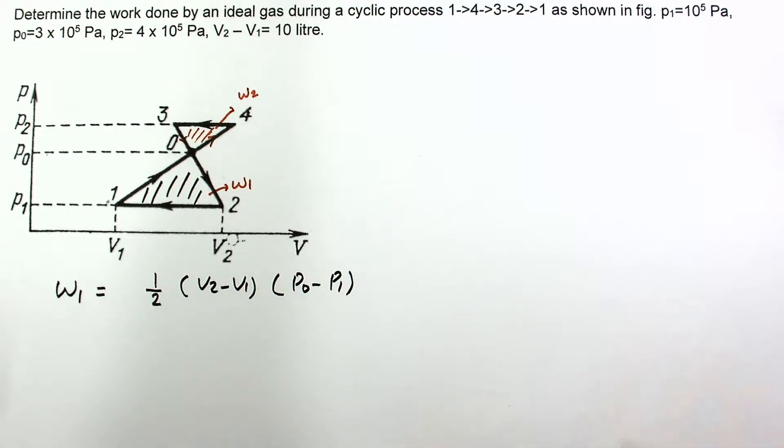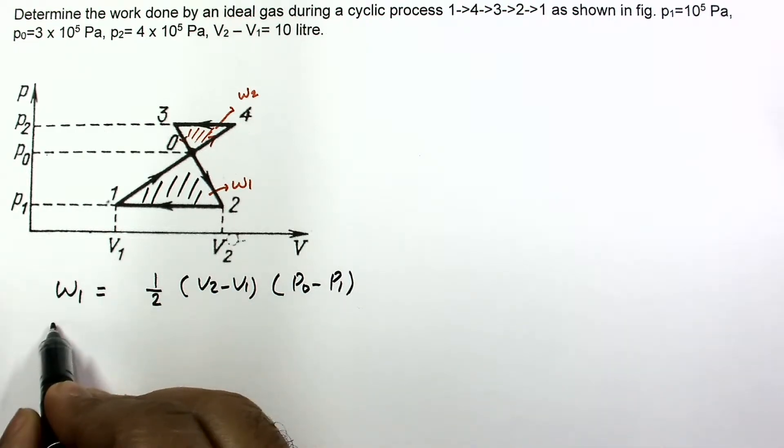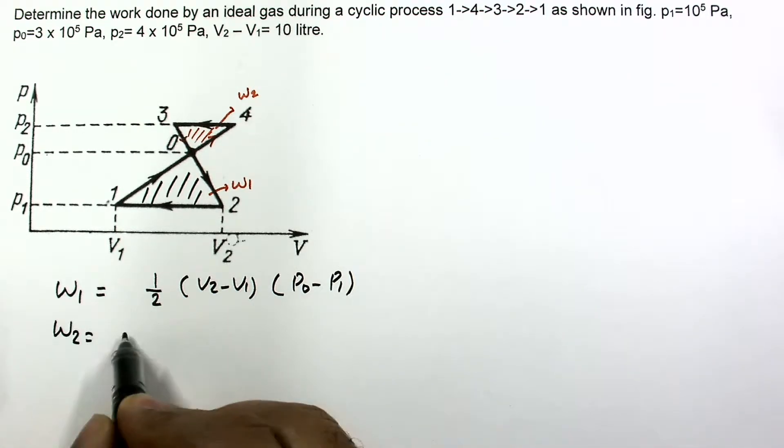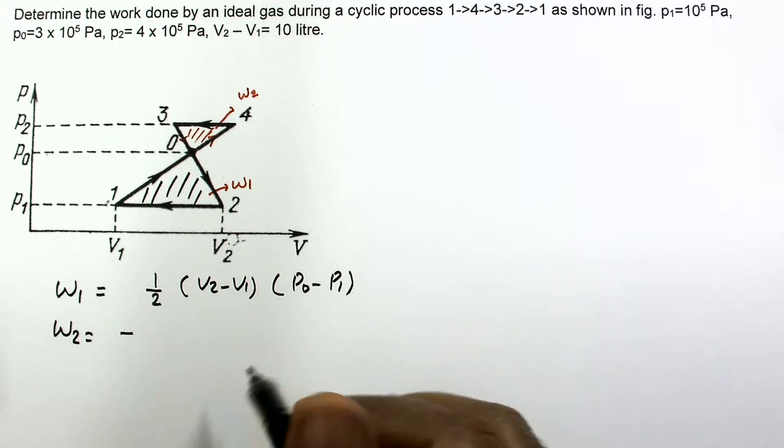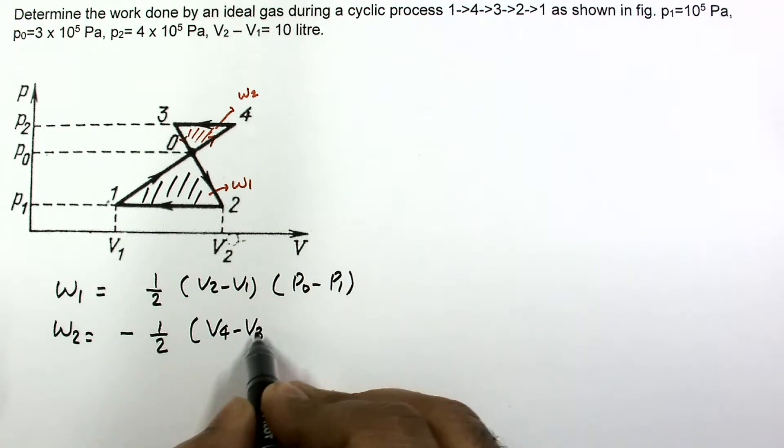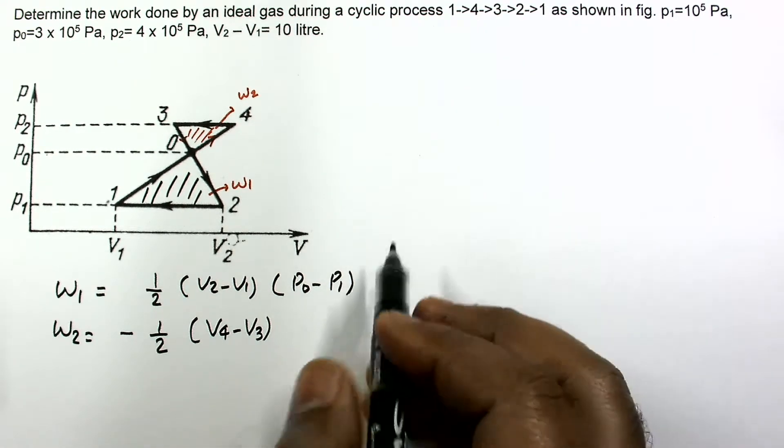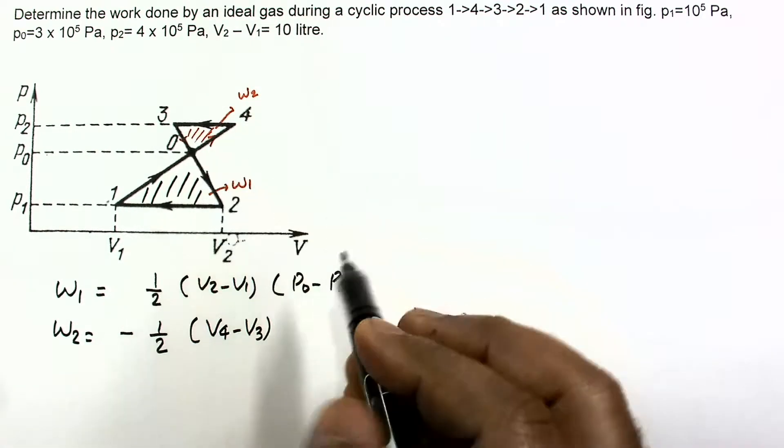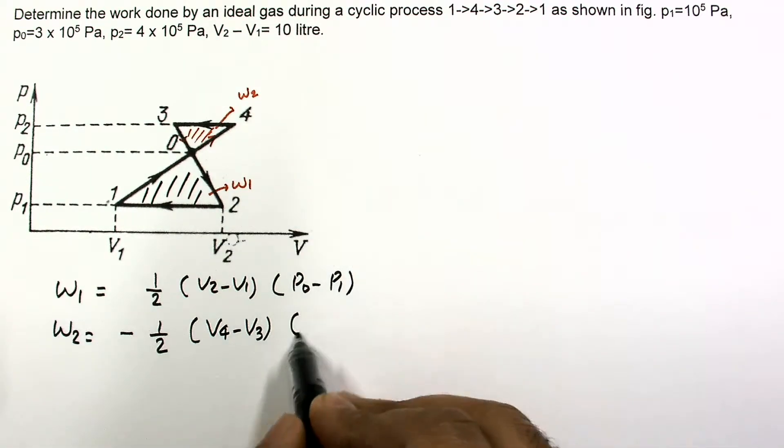W2 is negative so I am putting a negative sign here, half. The magnitude of change in volume is V4 minus V3, and this height will be here which is P2 minus P0.